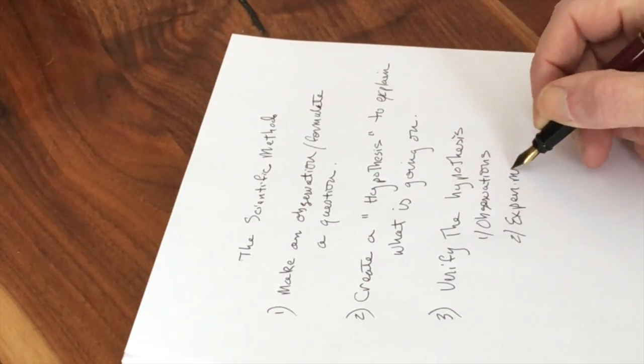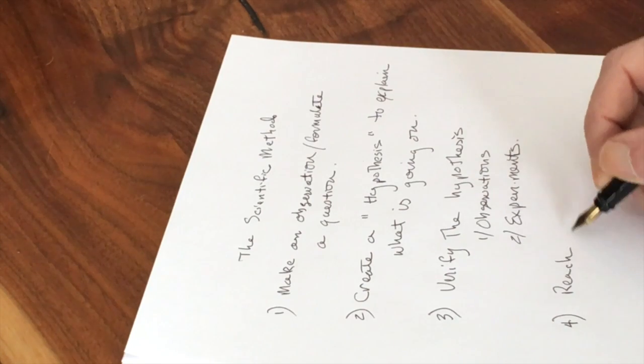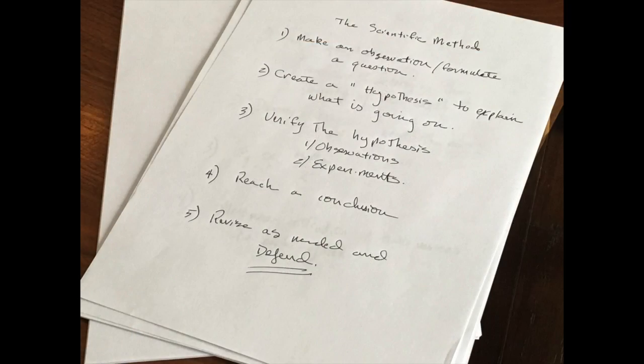Now the first part of scientific method is to actually come up with some sort of a question that you want to answer. This could be what is the density of the earth in the case of the Cavendish experiment. It could be why birds fly or why the sun rises.